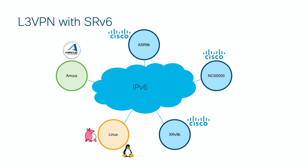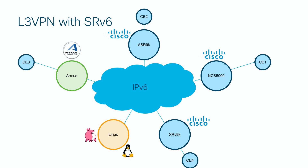There is a small exception: Linux doesn't run any IGP protocol, and reachability is based on static routing. To every PE router in the topology we have connected a CE router, except for Linux. On the Linux server we are running a simple container, and also for fast data plane we are running FD.io VPP.